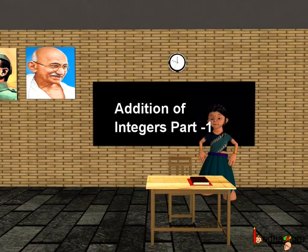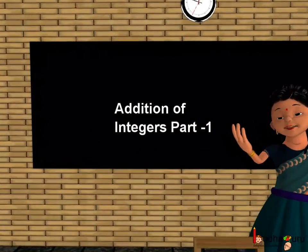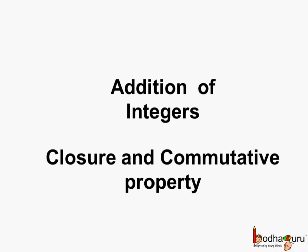Good morning children. Now we know what integers are and also that all the four operations — that is addition, subtraction, multiplication and division — can be performed on integers. So let us see the properties related to addition of integers first. Here we will cover the closure property and the commutative property related to addition of integers.